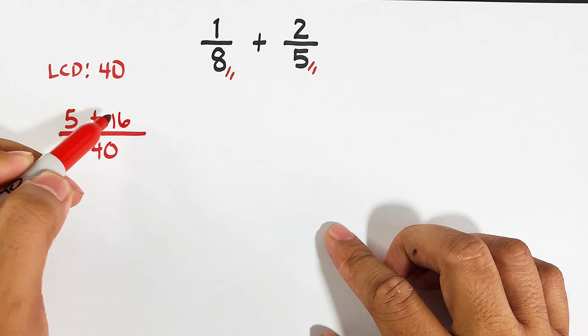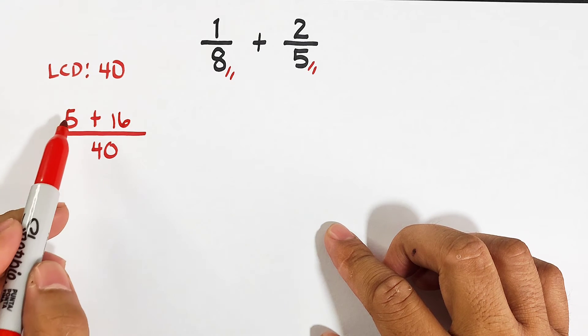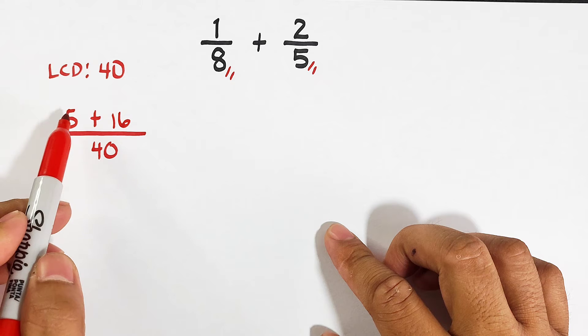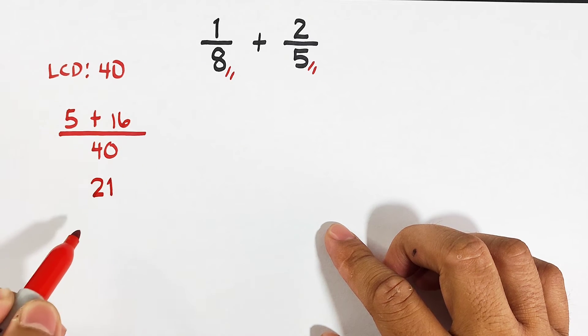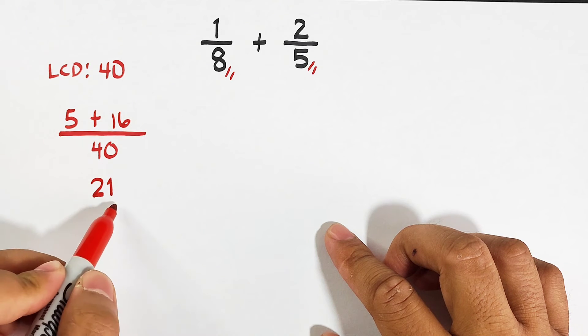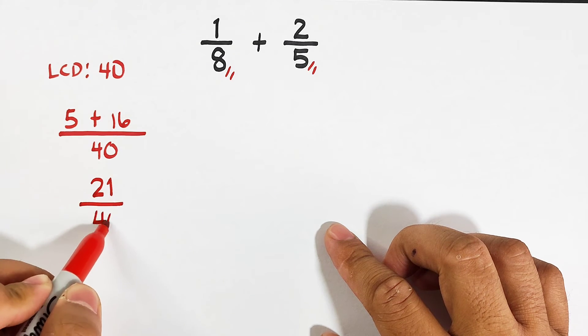So what we need to do is to add the numerators 5 and 16. And the answer is 21. Copy your denominator 40. And this is the answer. The correct answer is 21 over 40.